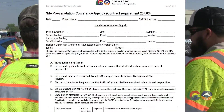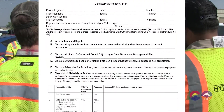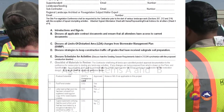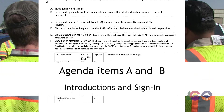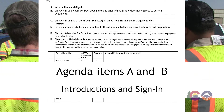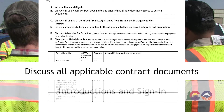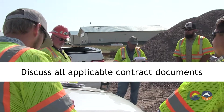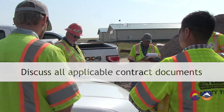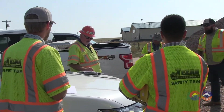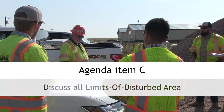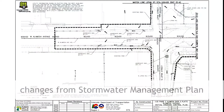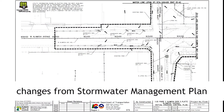The conference should start with the Pre-Vegetation Conference Agenda terms. After introductions and sign-in, discuss all applicable contract documents and ensure that all attendees have access to current documents. Next, discuss all limits of disturbed area changes from the Stormwater Management Plan.